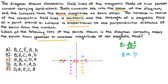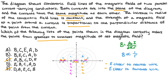Looking at our answer choices, we need to compare points E and B. Let's label the wires 1 (left) and 2 (right). Point E is 1 radius away from the closest wire, wire 2, whereas point B is just shy of 2 radii away from its closest wire, wire 1. Comparing the farther wires: E is approximately 4 radii away from wire 1, while B is just shy of 5 radii from wire 2. Point E is closer to both the nearest and farthest wire compared to point B. At both E and B we add the magnitudes of the two magnetic fields because they point in the same direction. Since E is closer — meaning a smaller r — there would be a bigger net magnetic field at E than at B.